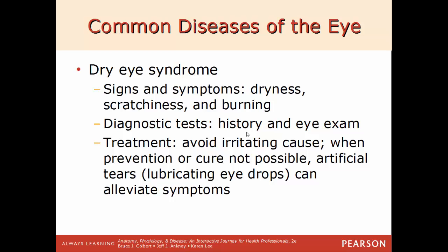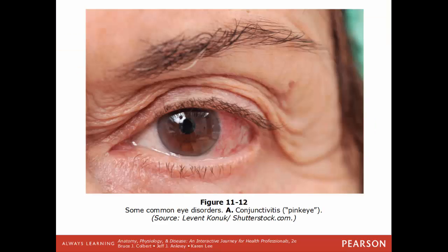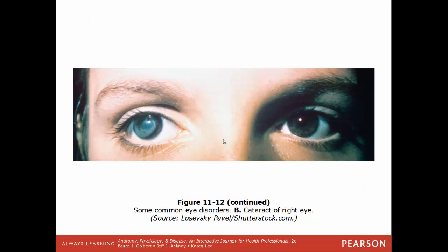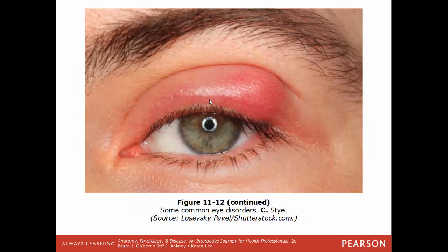Here is an example of conjunctivitis or pink eye — you can see the reddish color on one side of the eye. In this image, a woman has a cataract in her right eye — you can see how it's much more cloudy than it should be because the lens is becoming fogged over. Compared to her left eye, which is perfectly fine. If left uncorrected, the lens will become completely opaque and she'll be completely blind. Here is also an image of a stye — inflammation at the base of an eyelash affecting the entire eyelid.